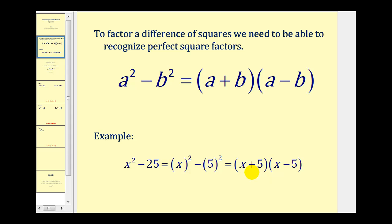And remember, since multiplication is commutative, meaning we can change the order, it doesn't matter whether we have the plus 5 here or the minus 5 here, and vice versa, as long as one is a sum and one is a difference.